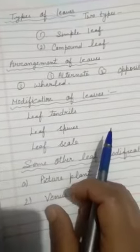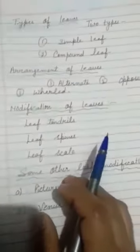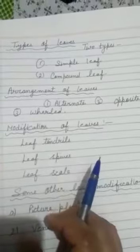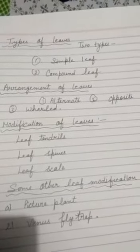Pitcher plant. A pitcher plant grows in an environment that is deficient in minerals such as nitrogen. To fulfill its nutrition requirements, it traps, kills and digests insects.